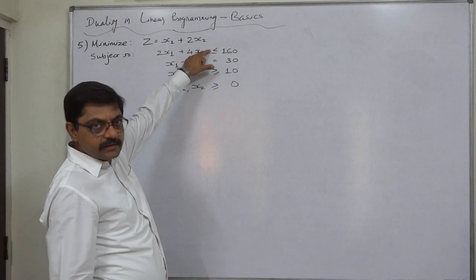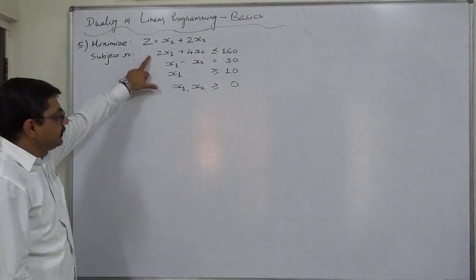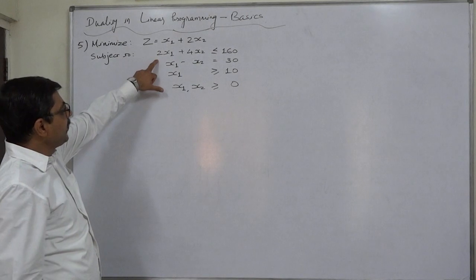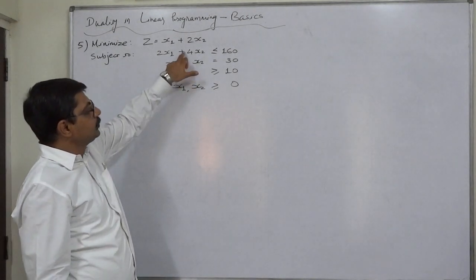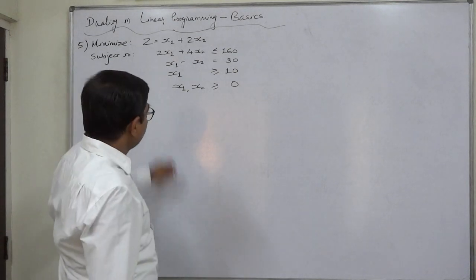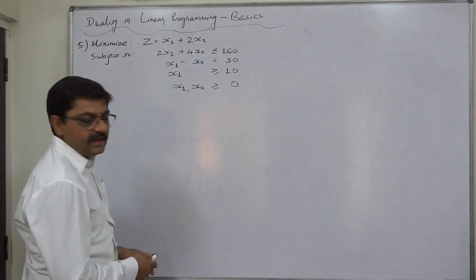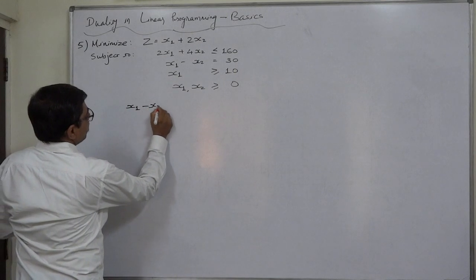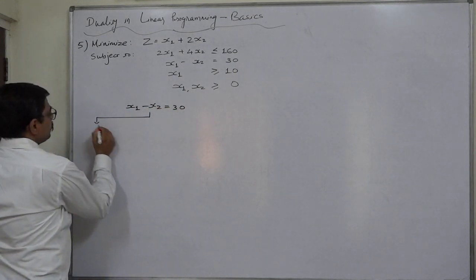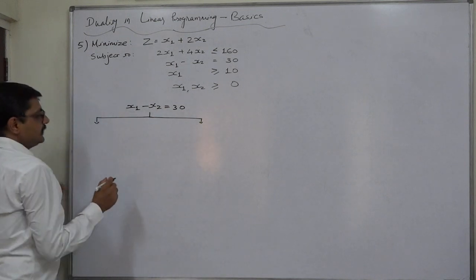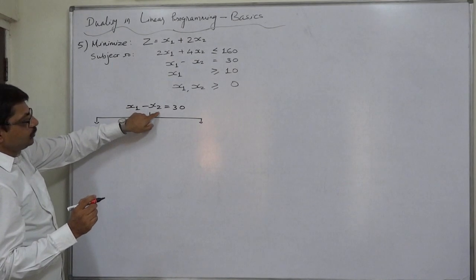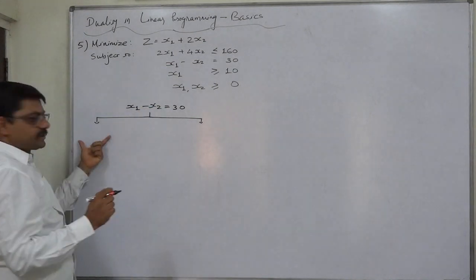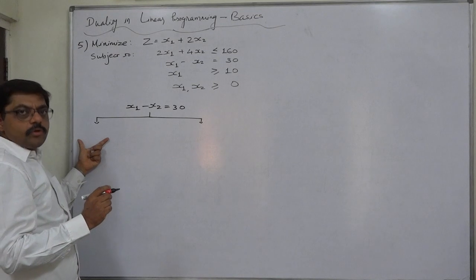For the first constraint, which is less than or equal to, we simply revert the sign: minus 2x1 minus 4x2 greater than or equal to minus 160. The unique case is the second constraint, which is an equality: x1 minus x2 equals 30. That equality can be split into two inequalities — x1 minus x2 greater than or equal to 30, and x1 minus x2 less than or equal to 30.